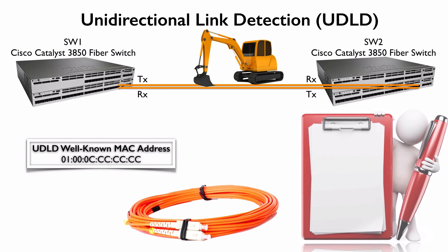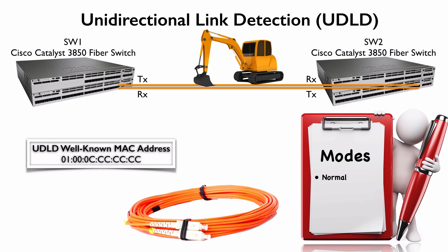When setting up UDLD, we have a couple of different modes we can configure. There is normal mode — with normal mode, if a switch detects what it believes to be a unidirectional link on one of its ports, it will just mark that port as having an undetermined state and generate a syslog message. In aggressive mode, which is the recommended mode to use most of the time, if a switch believes it has a unidirectional link on one of its ports, it will send a UDLD message every second for eight seconds. If it never sees any of those messages return, it will place that port into an error-disable state.